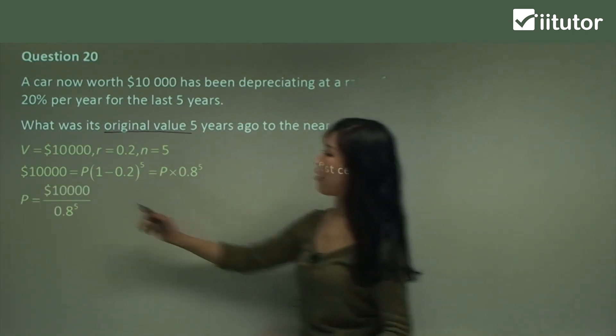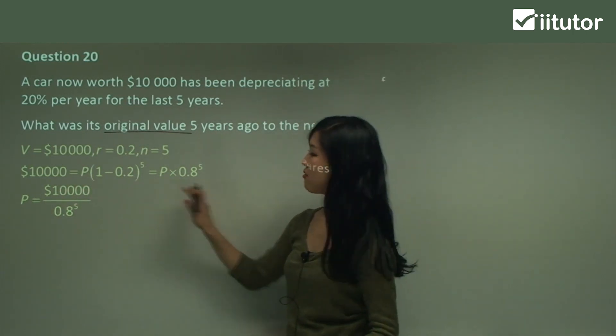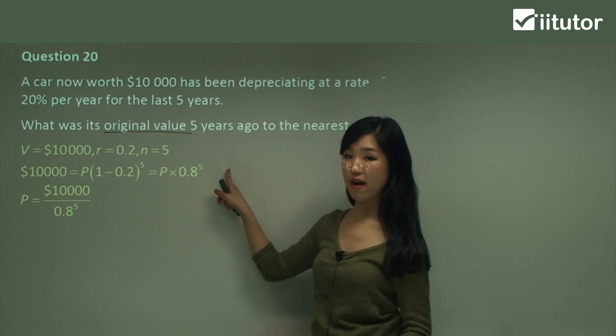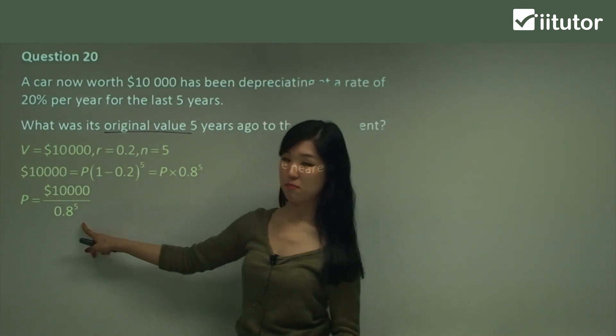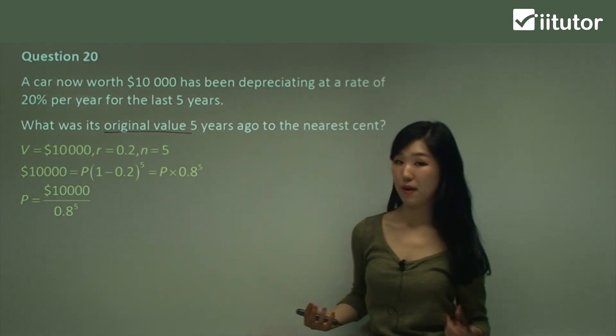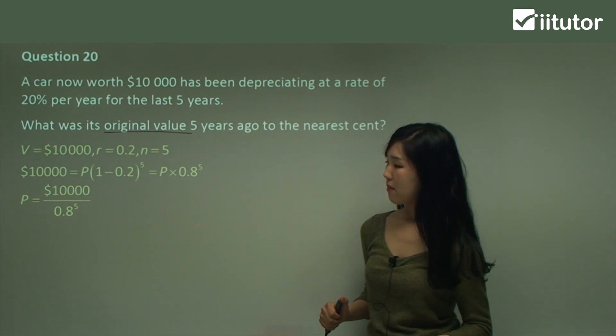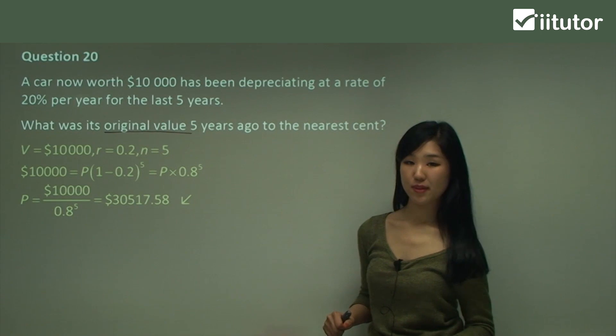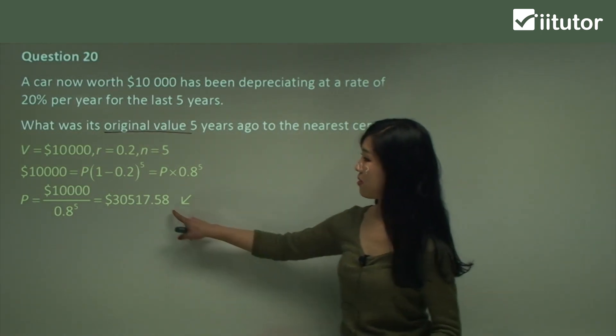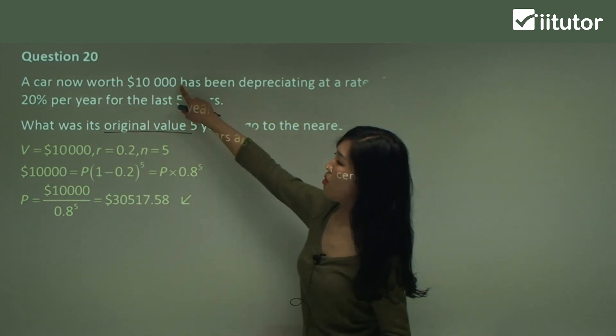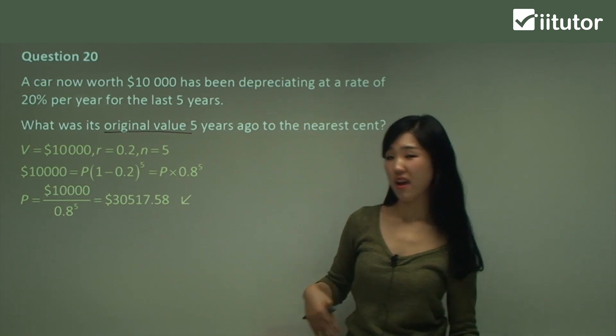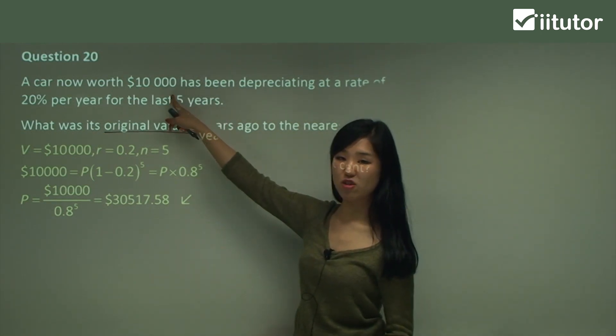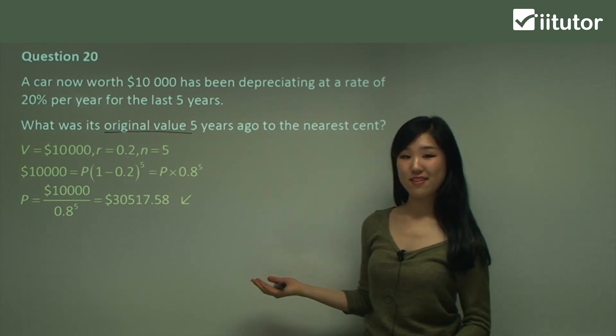So p would be, see how $10,000 is p times that? So if I divide both sides by 0.8 to the power of five, this will be eliminated. So I have p equals $10,000 divided by 0.8 to the power of five. Just a bit of algebra. So I've got that, just put that into your calculator, and you should get something like this. So basically, this value is a lot more than the car is worth now, because originally it was a lot more, but as time goes by, after five years, it depreciates to that value. So that's pretty much it, that's depreciation.